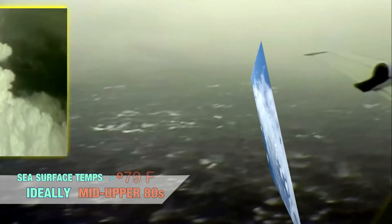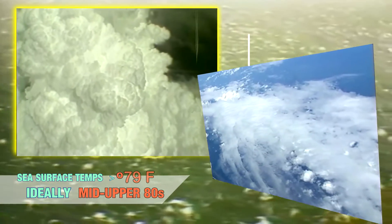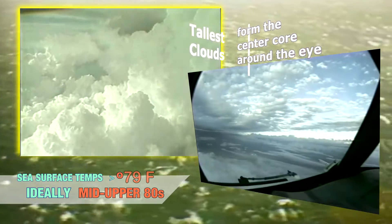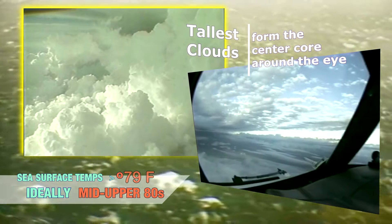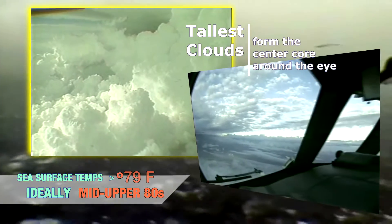For hurricanes to form and intensify, very warm sea surface temperatures are required — ideally in the mid to upper 80s. This enhances the water vapor near the surface and provides heat and fuel for the storms that form the hurricane.